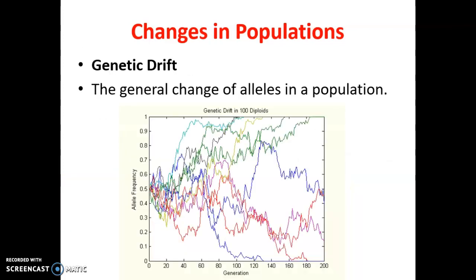Genetic drift is probably the least easy to explain. It's showing the randomness by which a population trait can become more dominant with no real influence behind it. We talked about how humans have naturally gotten taller over time, even though evolutionarily there's not really an advantage to being tall.